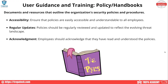Continuing on with domain 5.6, let's go over some user guidance and training. First, we're going to talk about policy and handbooks — these are documents and resources that outline the organization's security policies and procedures. We need to make sure that they're accessible, whether that's posting them on a content management database like SharePoint or a knowledge management system like Confluence that all employees have access to.